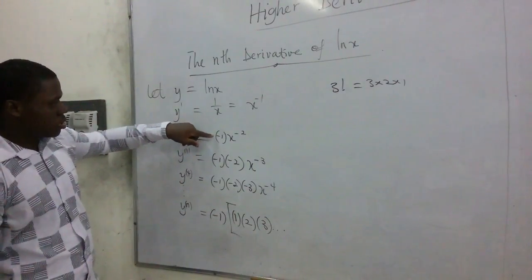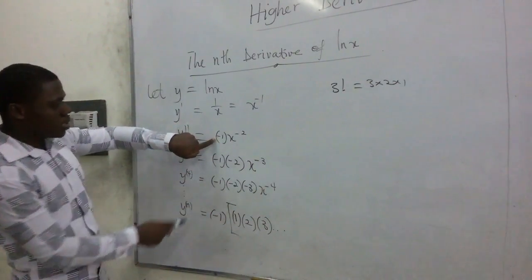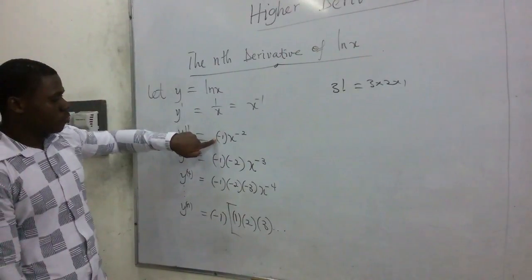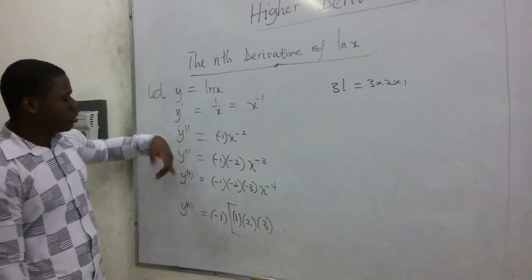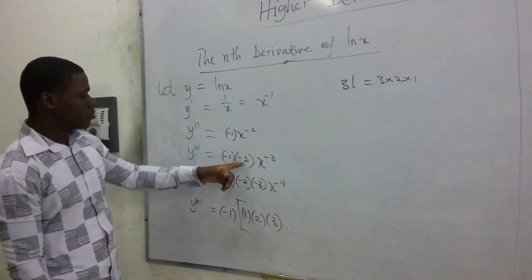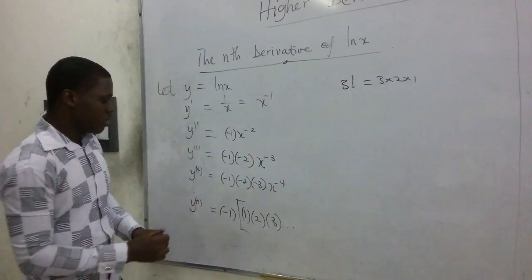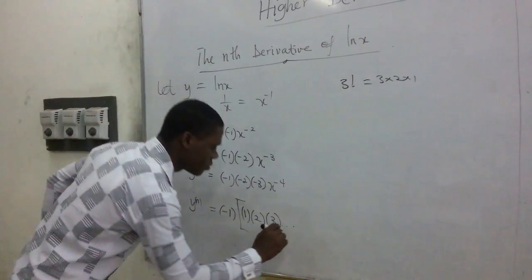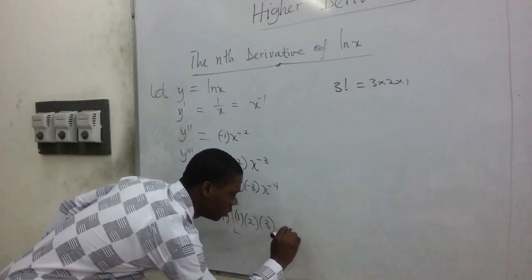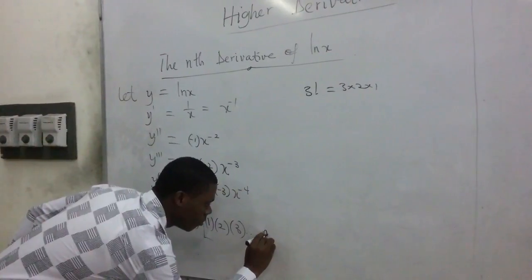We realize that this is second derivative and we have 1. Third derivative, we have 1, 2. So fourth derivative, we have 1, 2, 3. Now if this continues, we're going to have here n minus 1.